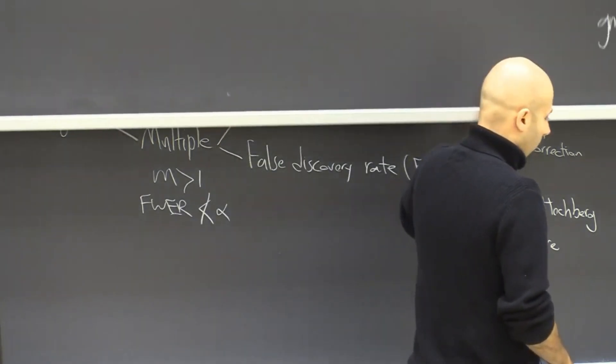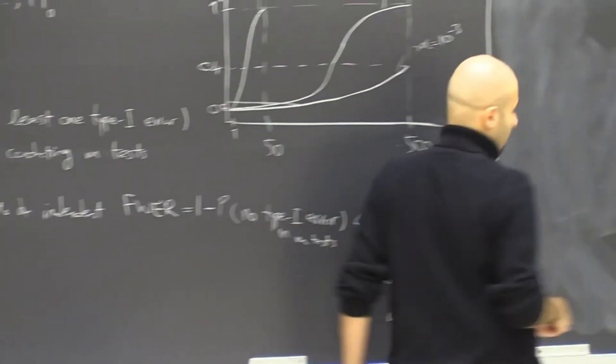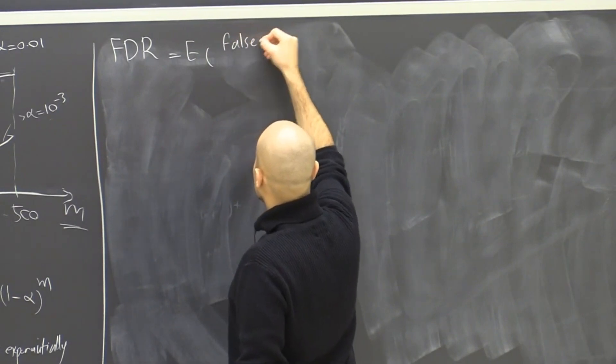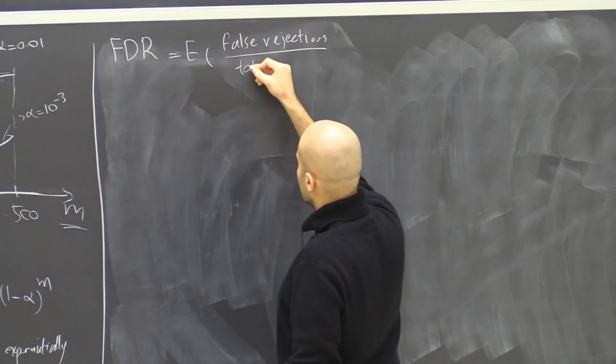So with false discovery rate, the false discovery rate is equal to the expected value of false rejections over total rejections.